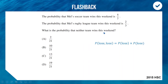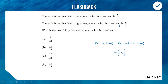We need to have Mel's teams both losing, so we want to find the probability of one team losing and then the other team losing. The way we find the probability of successive events is we multiply their probabilities together. If Mel has a five-in-seven chance of winning with her soccer team, she has a two-in-seven chance of losing. Likewise, her rugby team has a one-in-three chance of losing. So we need to do two-sevenths multiplied by one-third — that's lose times lose.